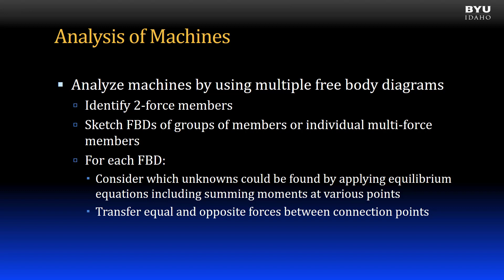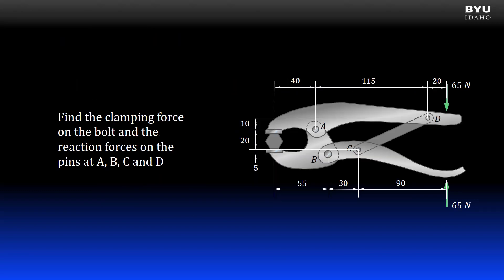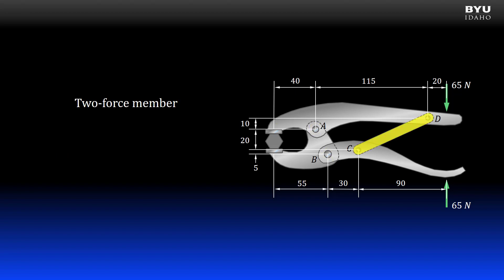Let's look at some strategies for analyzing machines. Here are some vice grips. I want to find the clamping force on the bolt and the reaction forces on pins A, B, C, and D. I first look for two-force members. We have one member CD. The other three members are multi-force members. I'm going to construct free body diagrams for each of them.